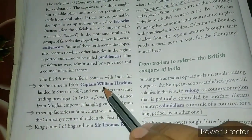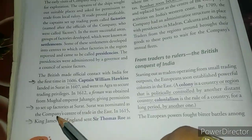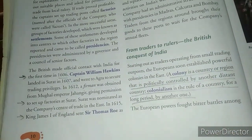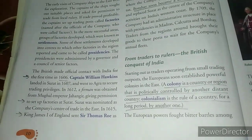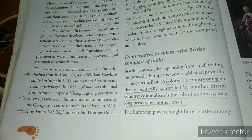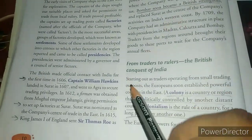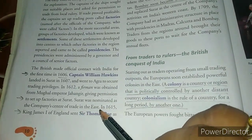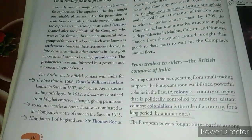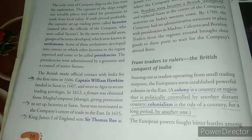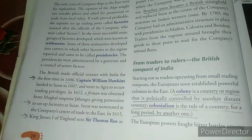In 1612, a firman was obtained from Mughal Emperor Jahangir giving permission to set up factories at Surat, which is in Gujarat. Surat was nominated as the company's center of trade in the east. From Europe, India is situated on the eastern side — that is why the Europeans named the company the East India Company.